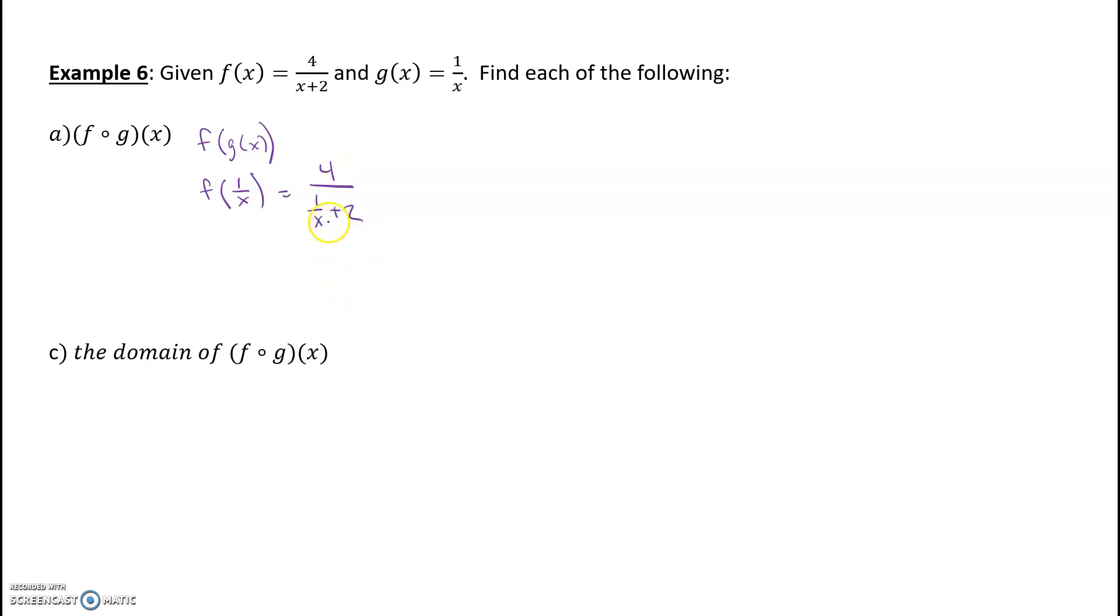Now there's a lot going on in this. We need to get a common denominator to go ahead and combine this denominator down here. So we're going to get 4. We have 1 over X. Common denominator would be X, so plus 2X over X, right? Which is 2. I'm going to go this way now. 4 over.